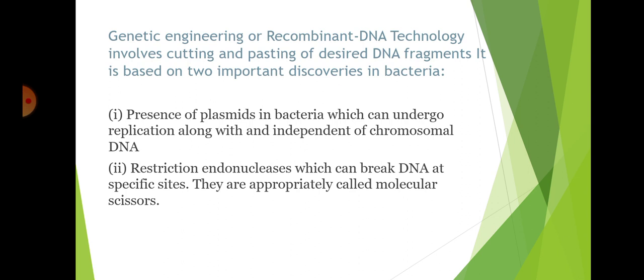Genetic engineering or recombinant DNA technology involves cutting and pasting of desired DNA fragments. It is based on two important discoveries in bacteria. First is the presence of plasmid in bacteria, which can undergo replication independent of chromosomal DNA. The second is restriction endonucleases, which can break DNA at specific sites — they are appropriately called molecular scissors.